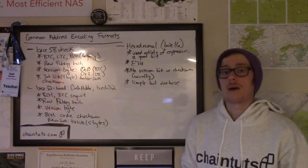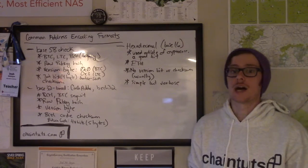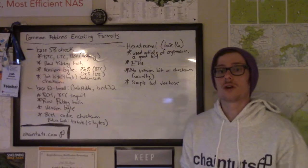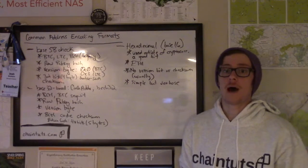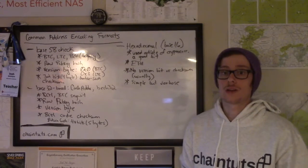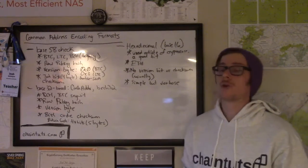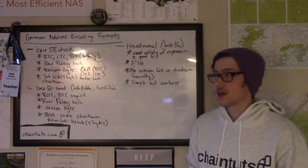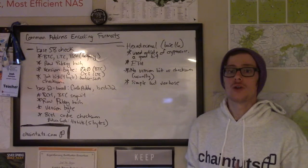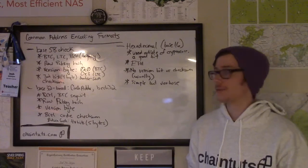First, we're going to talk about the really common Base58Check encoding scheme. This is the original address encoding scheme that came out with Bitcoin, and it's commonly used with Litecoin as well, and for Bitcoin Cash legacy addresses. However, Bitcoin Cash does commonly use a new encoding format that we're going to get to later in the tutorial.